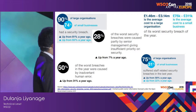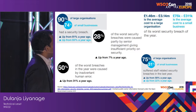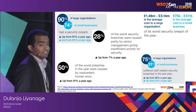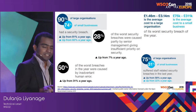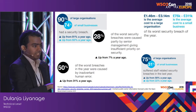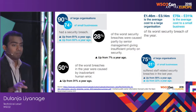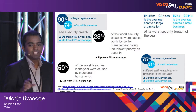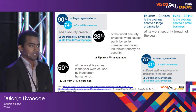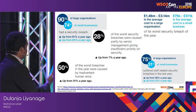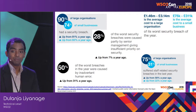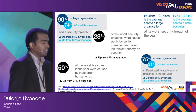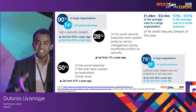The cost of the breaches? For a large organization it would be up to 3.14 million pounds, and for a smaller one, 311,000 pounds. Interestingly, 28% of the worst security breaches were caused partly by senior management not giving enough priority to the organization's security. And 50% of the breaches were caused by human error. 75% of large organizations and 31% of small businesses suffered staff-related security breaches — meaning internal breaches.